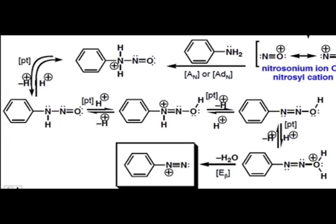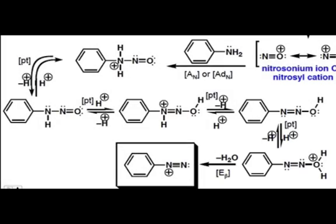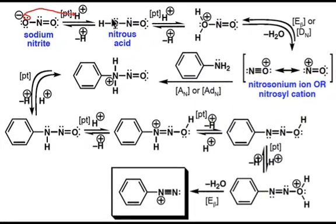A series of proton transfer steps sets up this intermediate to eliminate water in a beta elimination step to yield the diazonium ion. It's important to note that this reaction must be carried out at 0 degrees Celsius because the diazonium ion is unstable at higher temperatures. I would suggest taking this mechanism and practicing pushing the arrows for each step — you can never have enough practice in pushing electrons.